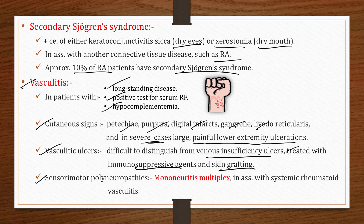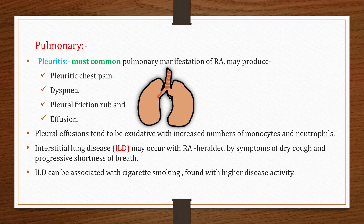Sensory-motor polyneuropathies, especially mononeuritis multiplex, may occur in RA. Mononeuritis multiplex is a painful, asymmetrical, asynchronous sensory and motor peripheral neuropathy involving isolated damage to at least two separate nerve areas. Multiple nerves in random areas of the body can be affected, and this is associated with systemic rheumatoid vasculitis.